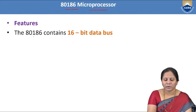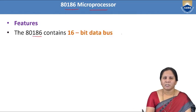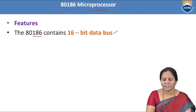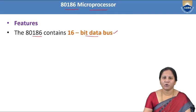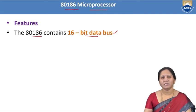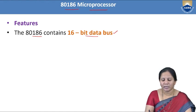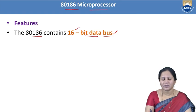The 80186 microprocessor is called a 16-bit microprocessor because its data bus size is 16-bit. Based on the size of the data bus, the size of the ALU will be determined. Here ALU stands for Arithmetic and Logic Unit. The data bus size of the 80186 microprocessor is 16-bit.